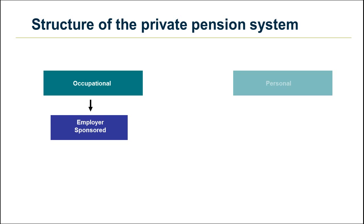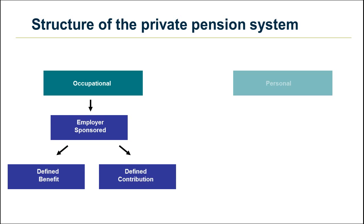Occupational pensions may be either defined benefit or defined contribution. Defined benefit schemes are those where the scheme rules specify the rate of benefits to be paid, for instance in relation to final salary. Defined contribution pensions, also known as money purchase, are those where the pension will depend on investment performance and any annuity that is purchased.